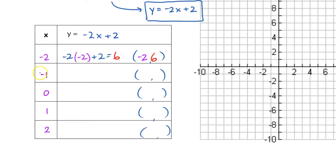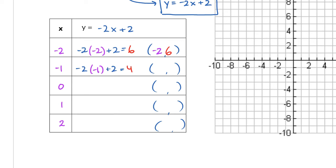All right, now our next x value is negative 1. So we're going to go ahead and plug negative 1 in for our x. So we start with negative 2, then multiply that by negative 1, and then plus 2. So when I do this in my calculator, negative 2 times negative 1 is positive 2, plus 2, that will give me 4. So now I have the coordinate negative 1, 4.